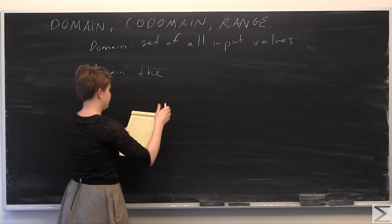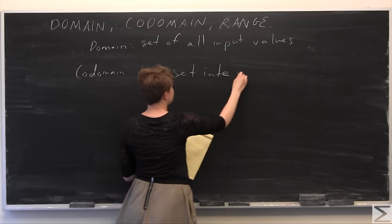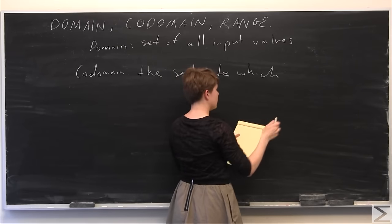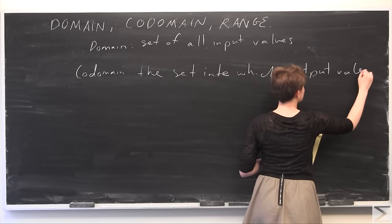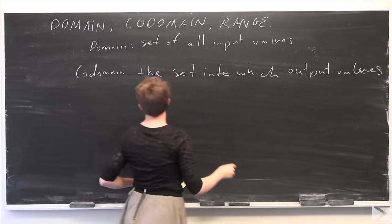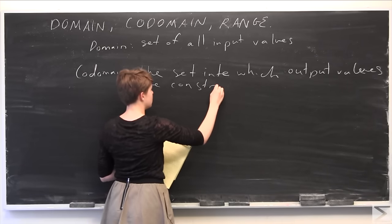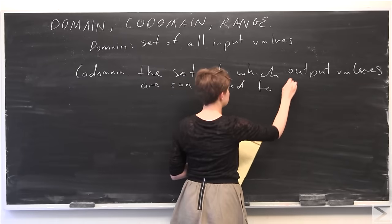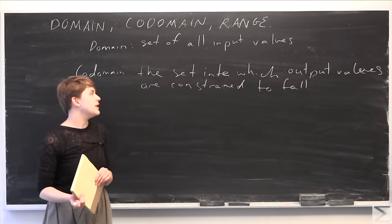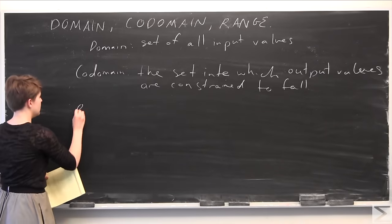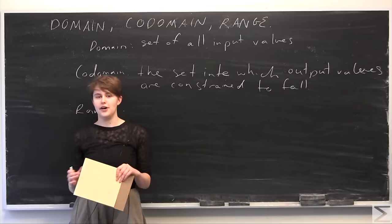So I'll write here: the codomain is the set into which output values are constrained to fall. And finally, the range is the set of all actual output values of the function.